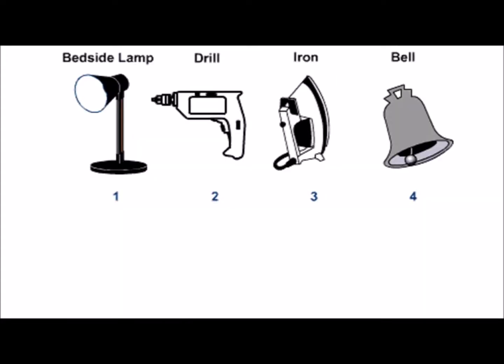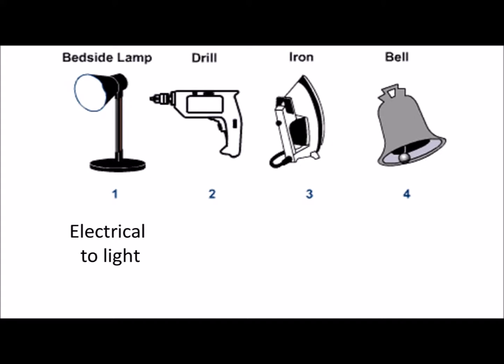Devices convert one type of energy to another. There are four devices shown here. The bedside lamp converts electrical energy to useful light. The drill converts electrical to useful kinetic. The iron converts electrical to useful heat. And moving away from electrical, the bell converts kinetic to sound.